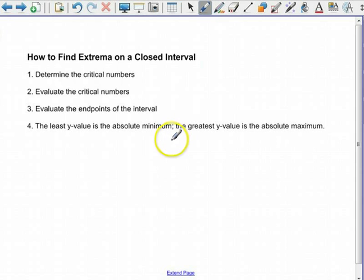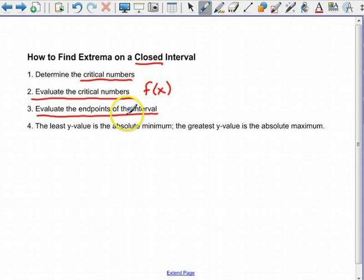So what are the steps involved in finding an extrema on a closed interval? Number one, determine the critical numbers like we just did. Take the derivative, set it equal to 0, see where it is equal to 0 and where it doesn't exist. Evaluate the critical numbers. In other words, plug them back into the original function, the f function, not the derivative, but the original function. Don't forget to evaluate the end points of the interval because this is a closed interval, so we need to include the beginning and end of the interval.